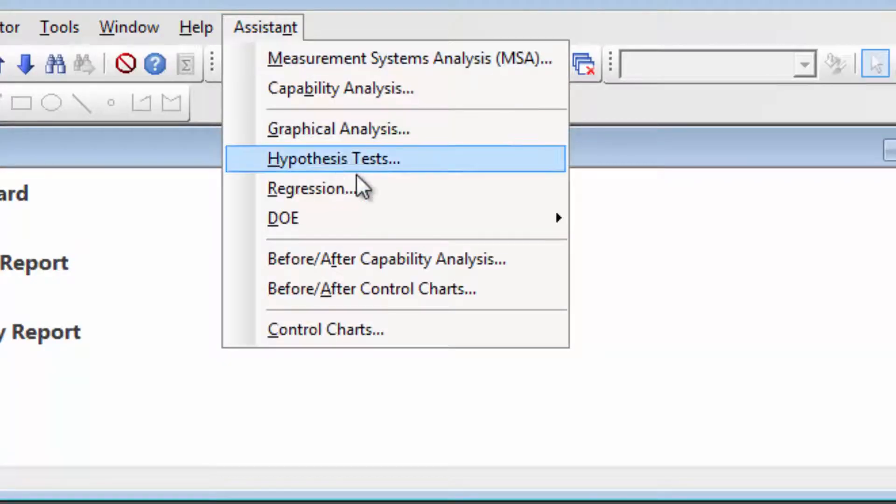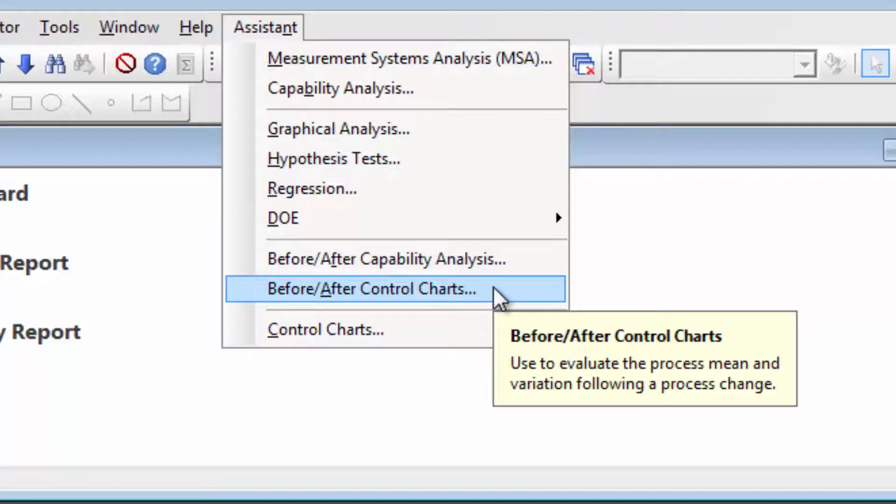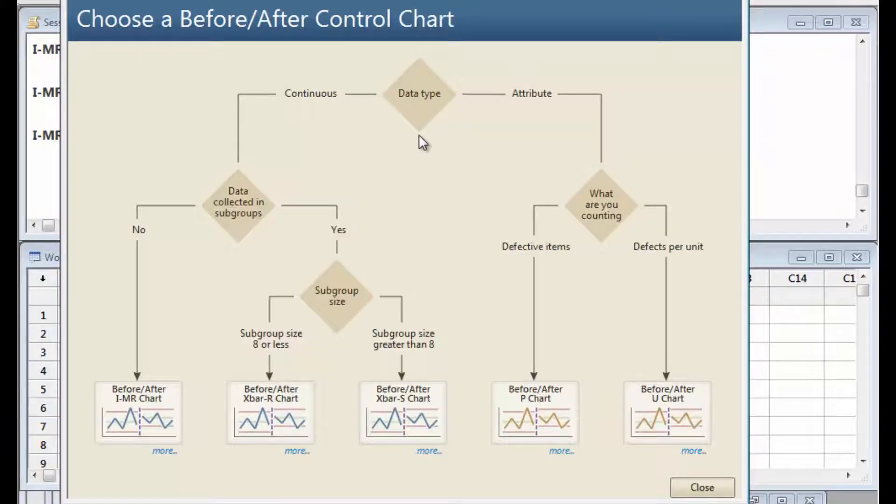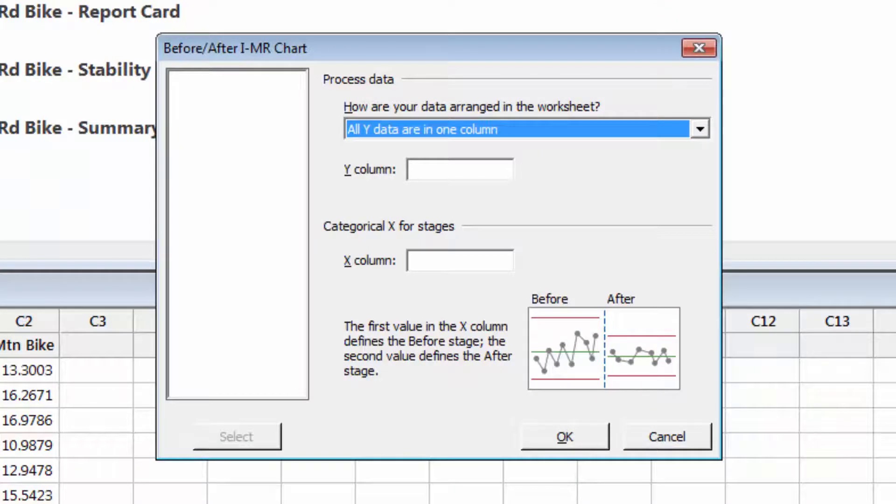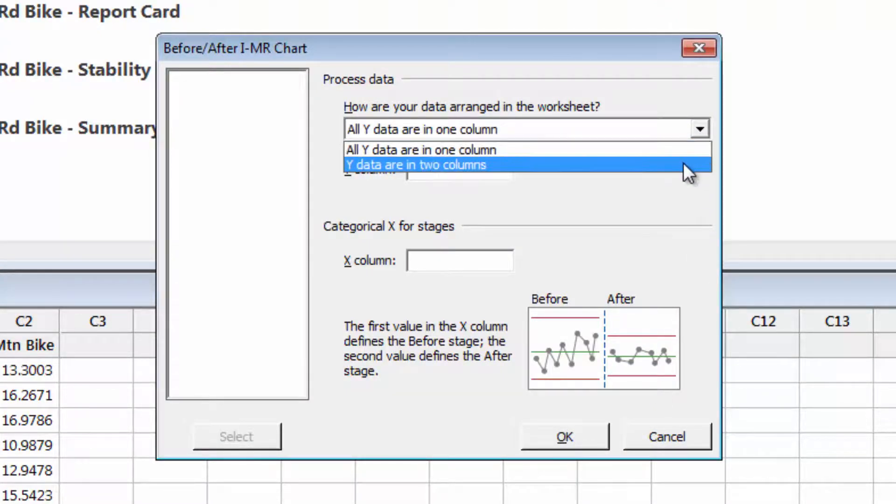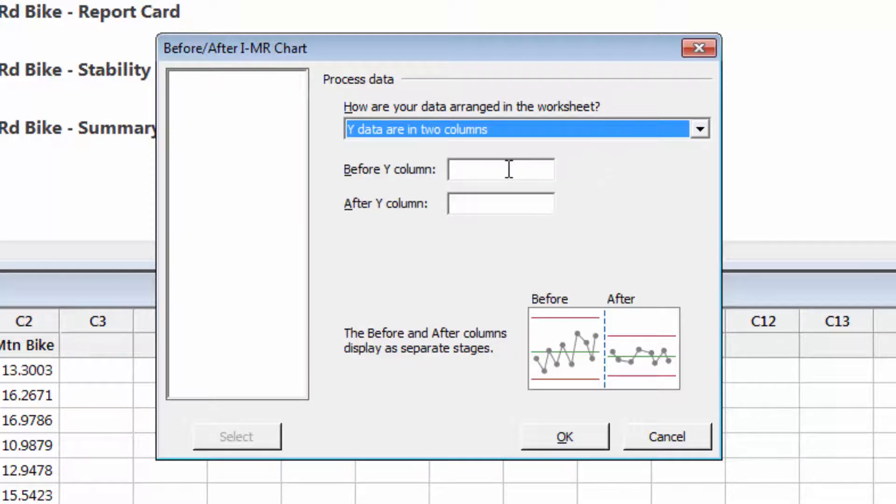Choose Assistant Before-After control charts to compare the process with the old route to the new one. With continuous data that was not collected in subgroups, the Assistant's decision tree directs you to the Before-After IMR chart. The data from Joel's new route is in a second column of the worksheet, so choose Road Bike as the Before Y column and Mountain Bike as the After Y column.